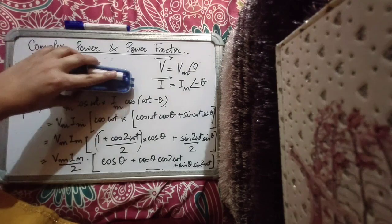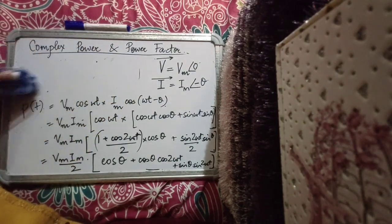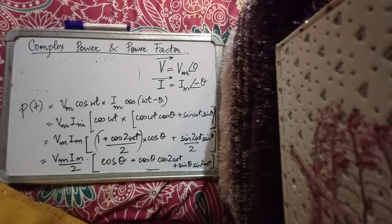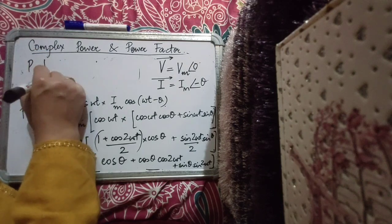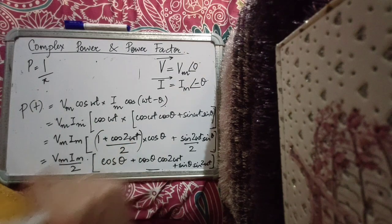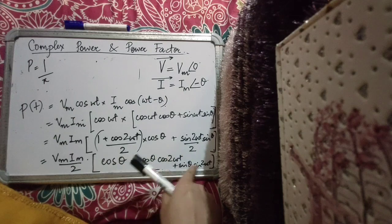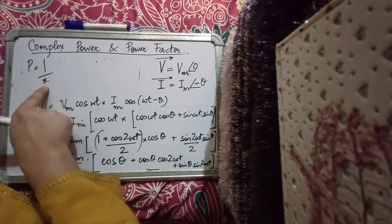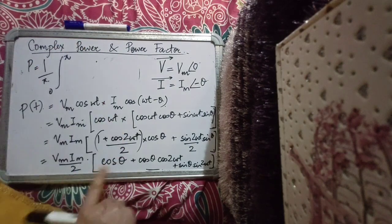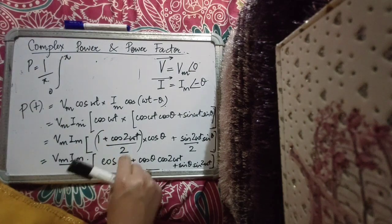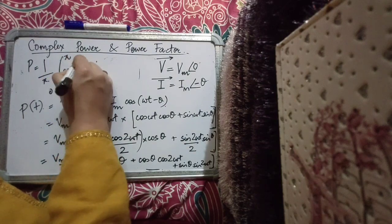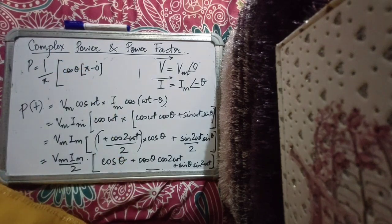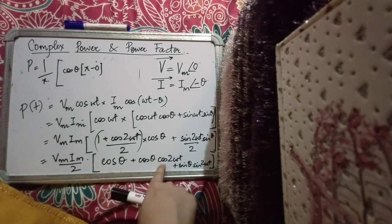The average power is the integral of instantaneous power over the time period divided by the time period. For signals with a 2ωt component, the period is π. Integrating the constant term cos θ over [0, π] gives cos θ · π. The integral of cos(2ωt) over [0, π] gives sin(2ωt)/2 evaluated at the limits.